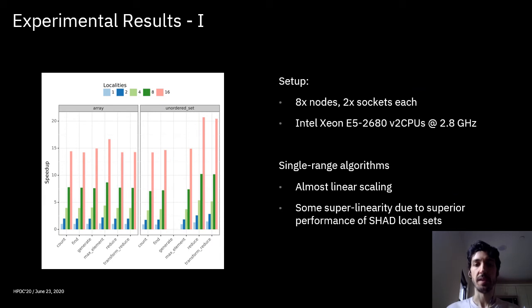I will conclude my presentation with a quick look at some experimental results. Here we are seeing how on single range algorithms our implementation of the distributed parallel policies scales pretty linearly, at least up to 16 sockets. We have some super-linearity that's probably due to a superior performance of the SHAD implementation of local sets over the implementation that we found on the standard library on the execution systems, but basically we are showing linear scaling here.